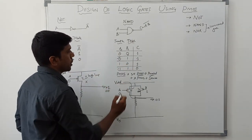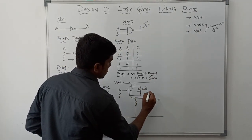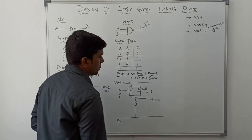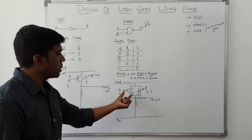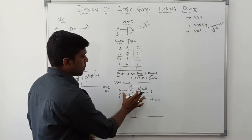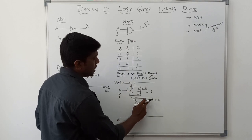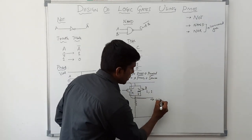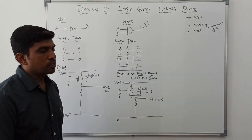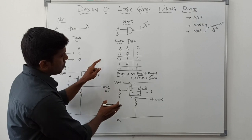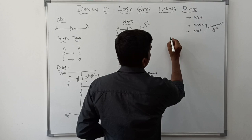Taking another input combination: A value 1 and B value 1. In this case both transistors turn off, so the circuit goes to a high impedance state. There is no current flow between VDD and the output terminal, so the output value is 0. Comparing this result with the truth table — both are the same.